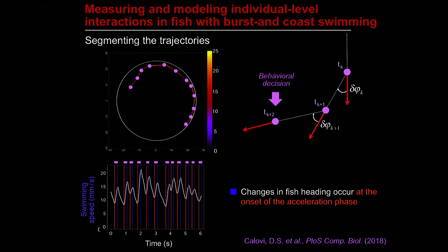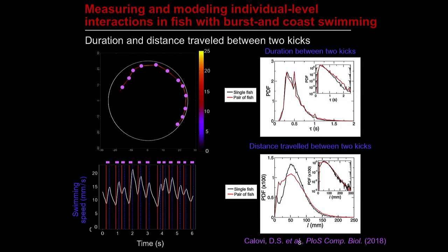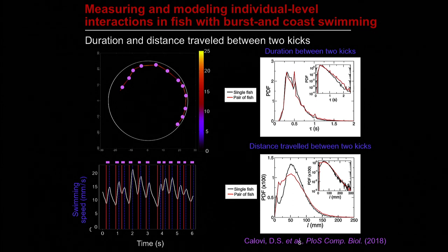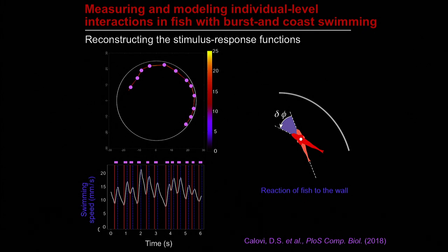Most changes in fish heading occur exactly at the onset of the acceleration phases, so we can analyze fish trajectories as a series of discrete behavioral decisions in time and space, describing the trajectory as a succession of segments and angular changes between segments. We found that the average duration between kicks was close to 0.5 seconds when fish were swimming alone or in pairs, and the mean length covered between two successive kicks was about 70 millimeters, slightly more than two body lengths. The key interest of the burst-and-glide swimming mode is that we can use the spatial location where kicks were performed to identify the potential stimuli that could have elicited the behavioral response.